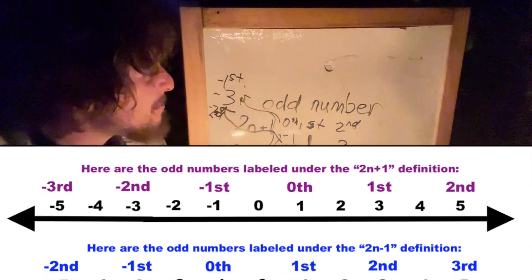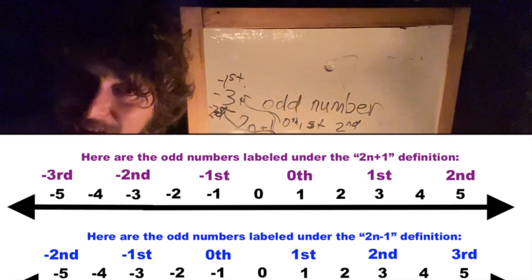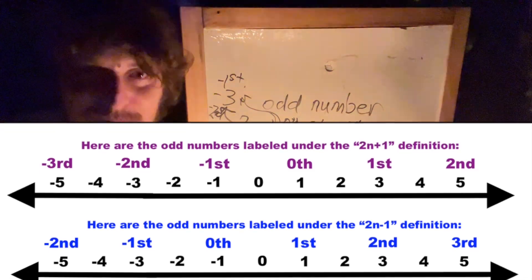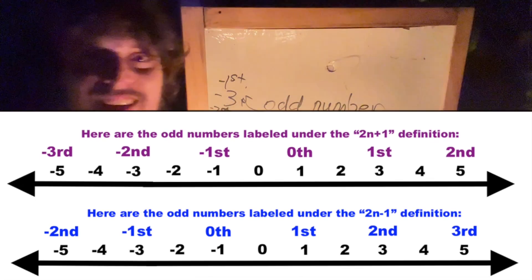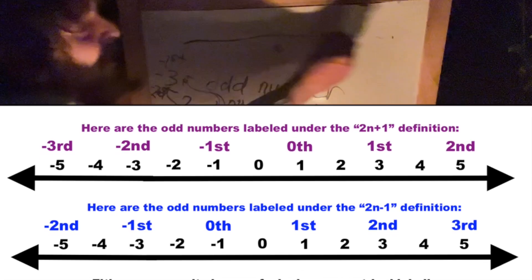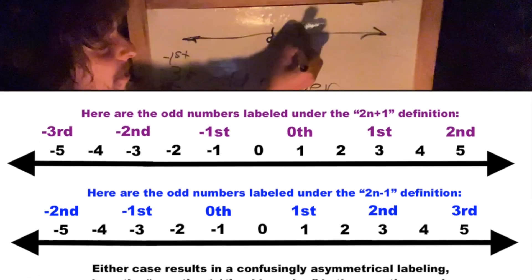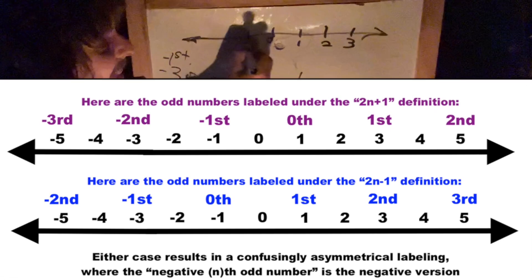But here is the issue, is that you'd like them to be balanced like the even numbers were, where with the even numbers, the negative nth even number is the negative version of the nth even number.